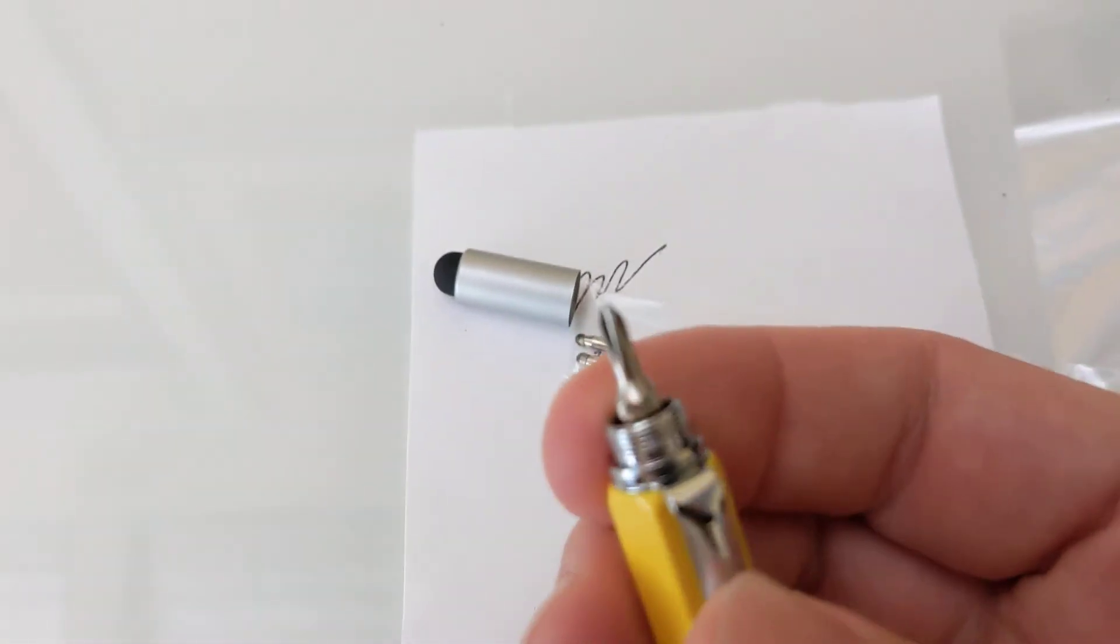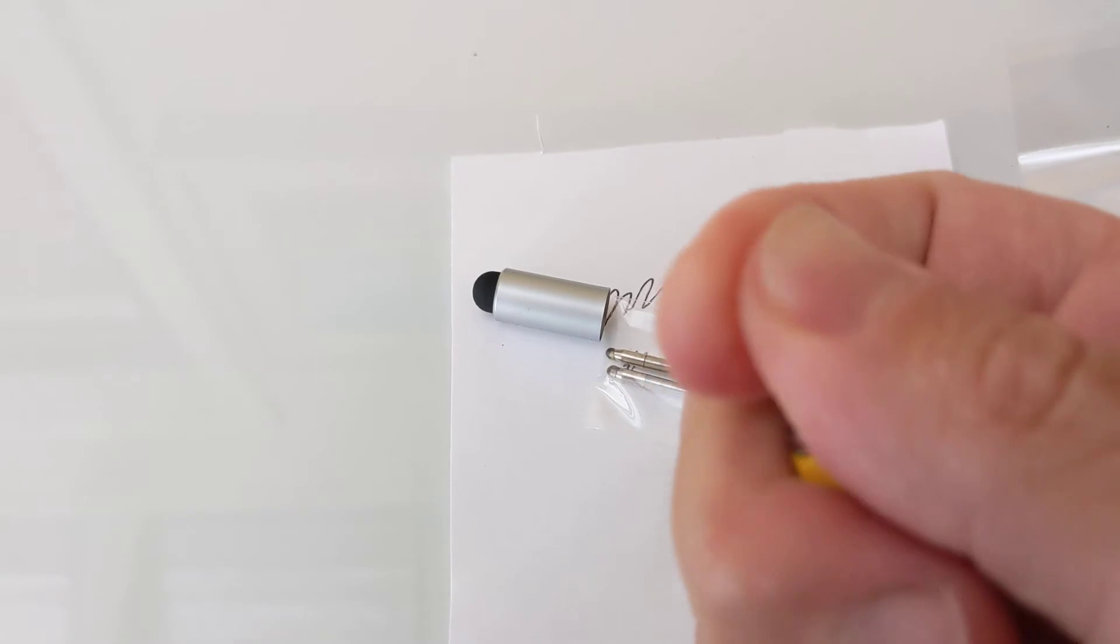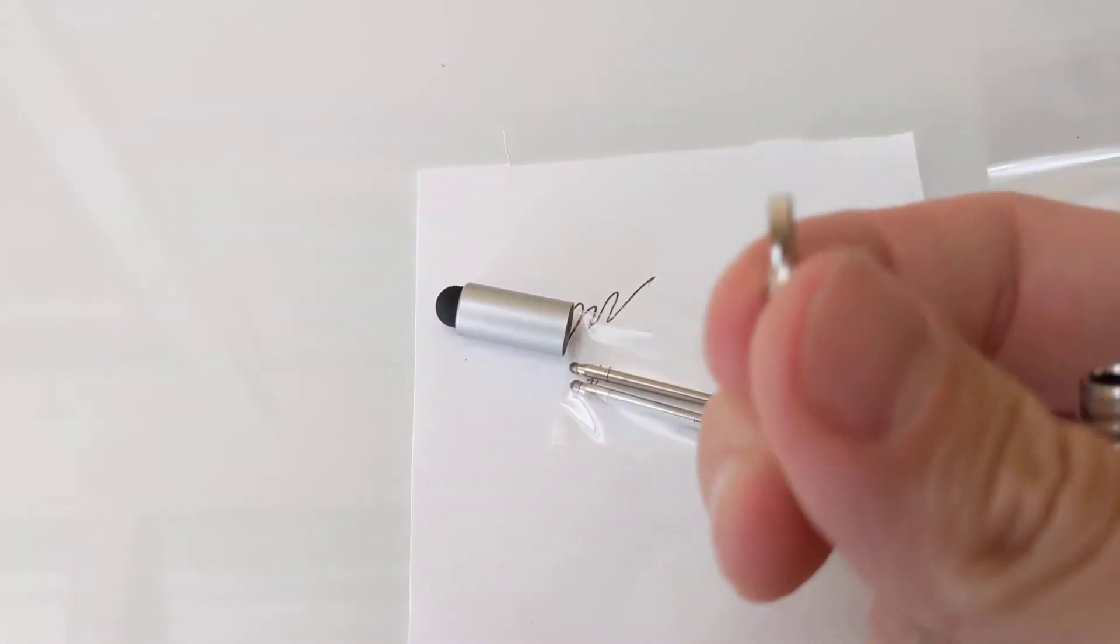So underneath the stylus tip here is the Phillips head. That's reversible. Flathead.